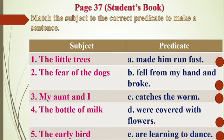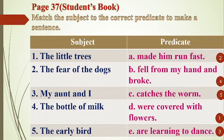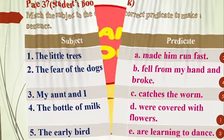Now let us do the exercise. Can you tell me the answer? 'The little trees' — what is the answer? The answer is 'were covered with flowers.' Very good. 'The fear of the dogs made him run fast.' 'My aunt and I are learning to dance.' 'The bottle of milk fell from my hand and broke.' 'The early bird catches the worm.' Very good. Let us check the answers — I have given you the answers here.